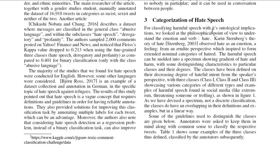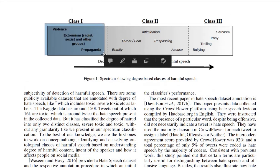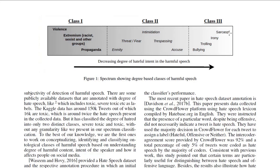Categorization of hate speech. For classifying harmful speech with ontological implications, the authors looked at philosophical perspectives to understand the emotion of hate. Karen Stenberg's Theory of Hate observed hate as an emotion from an erudite perspective, inspiring extended nominal categories of hatred. Harmful speech is modelled into a spectrum showing a gradient of hate and harm with three classes defined on decreasing degree of harmful intent from the speaker's perspective — class 1 being the most extreme, class 2 less so, and class 3 the least, though still detrimental on its own.